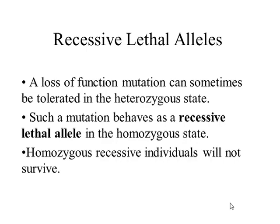You can go ahead and follow along on your Big Ideas, page four, where we're talking about recessive lethal alleles. A recessive lethal allele is caused by a loss of function mutation, or a null allele, as we learned about earlier. A lot of times these are tolerated in the heterozygous state — having one copy of the allele, the organism still survives. But if they're homozygous recessive, or they have two copies of this allele, then they die.